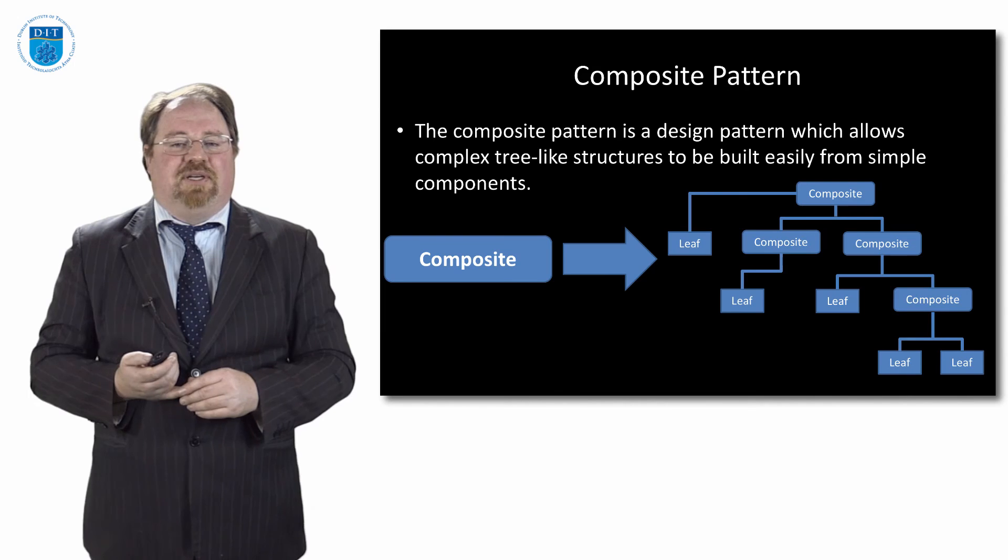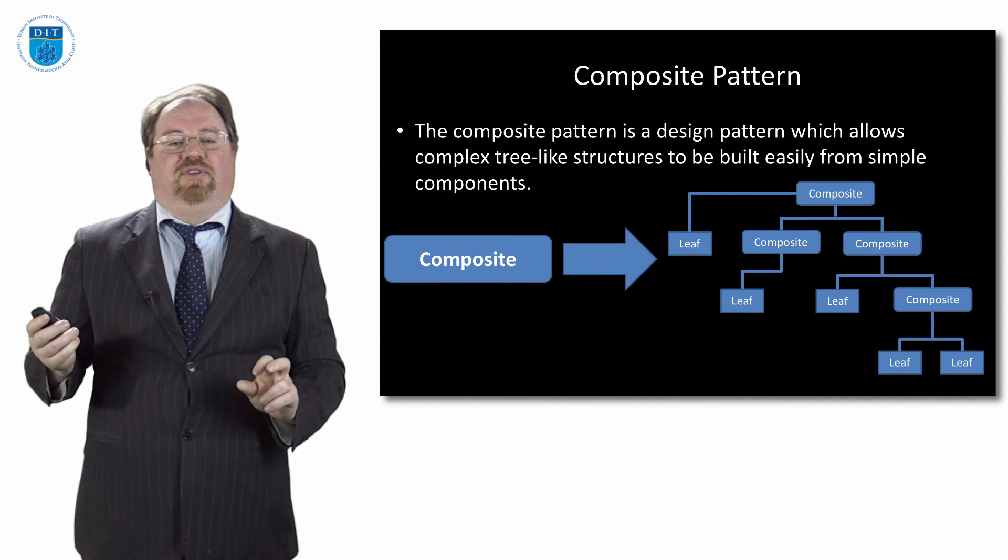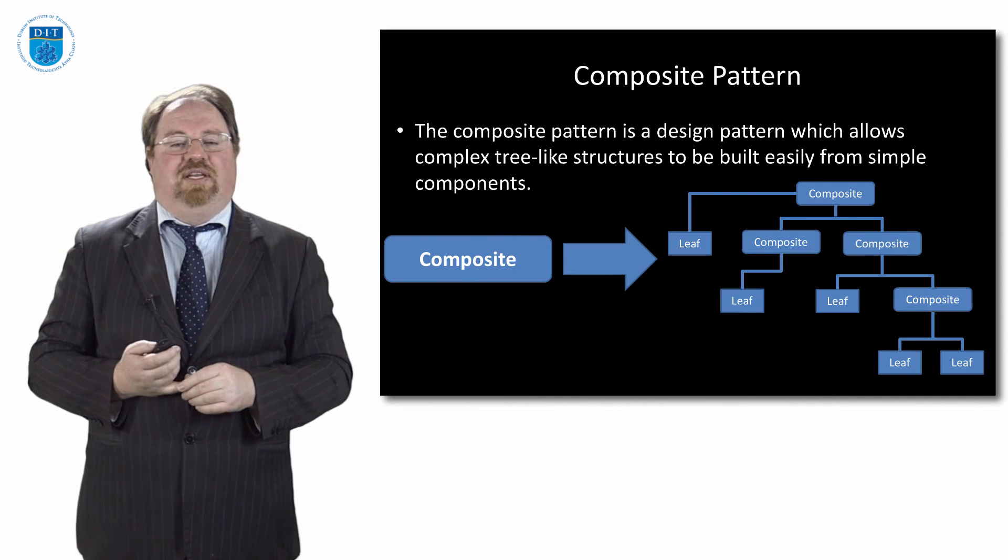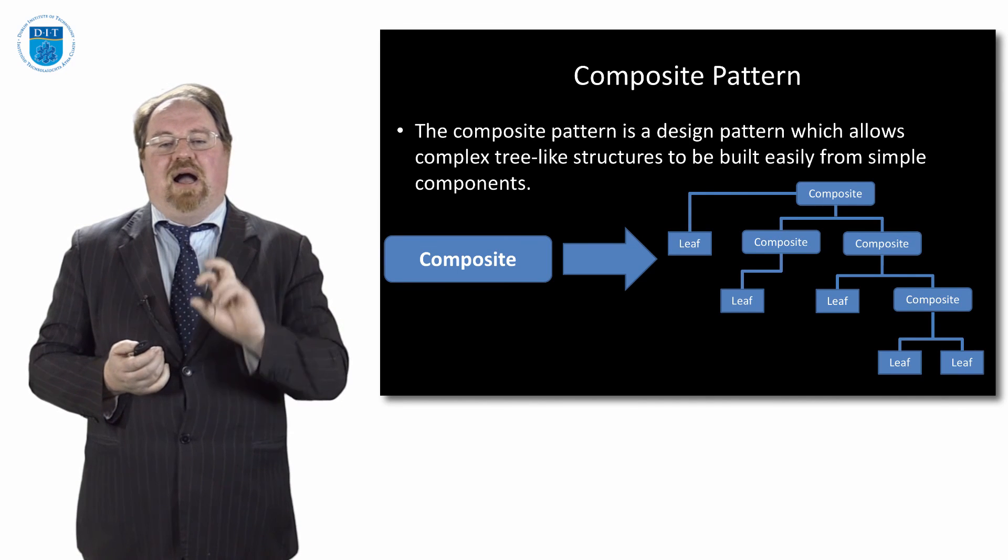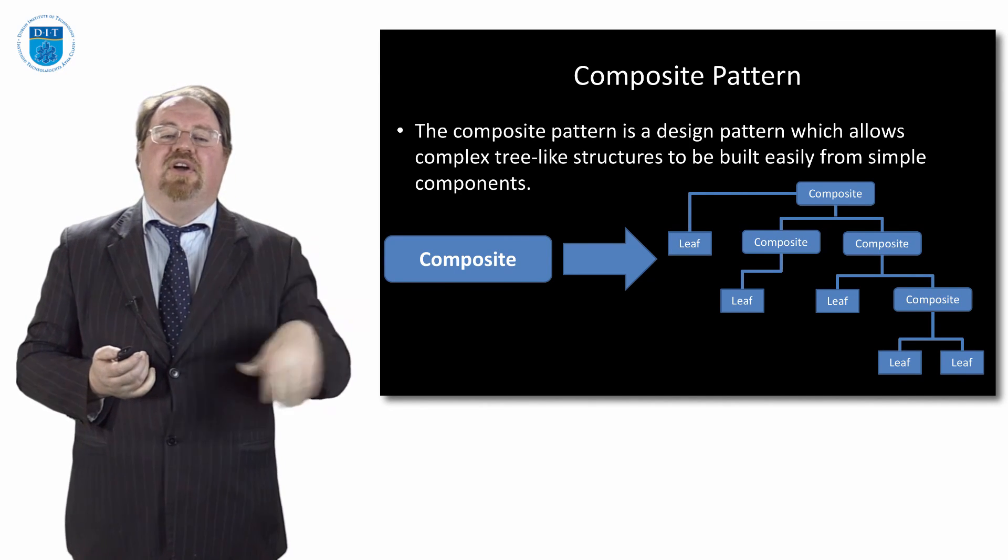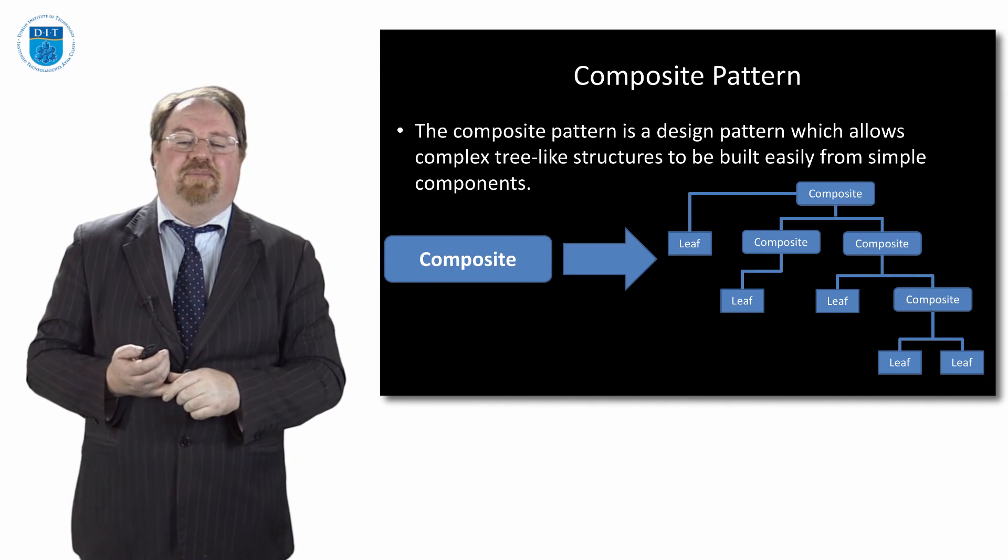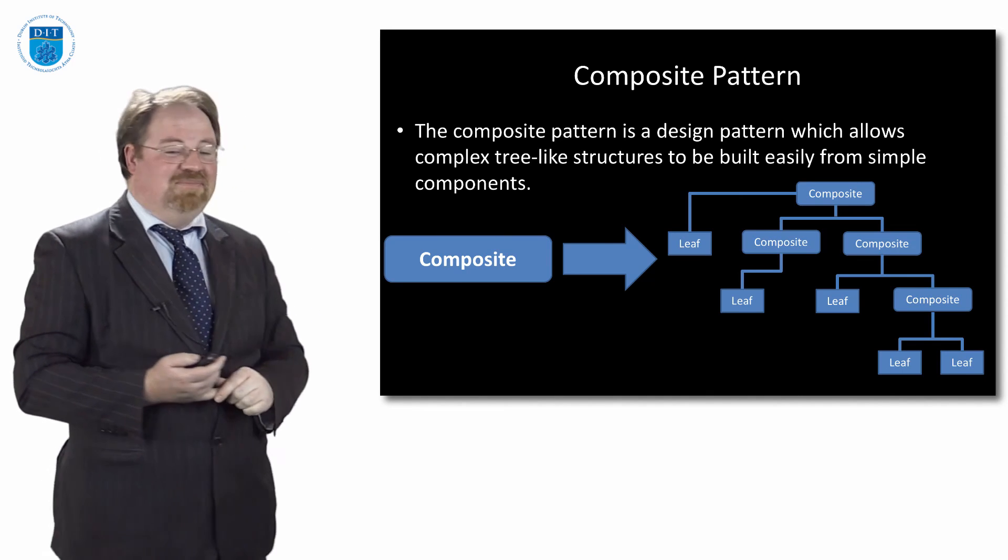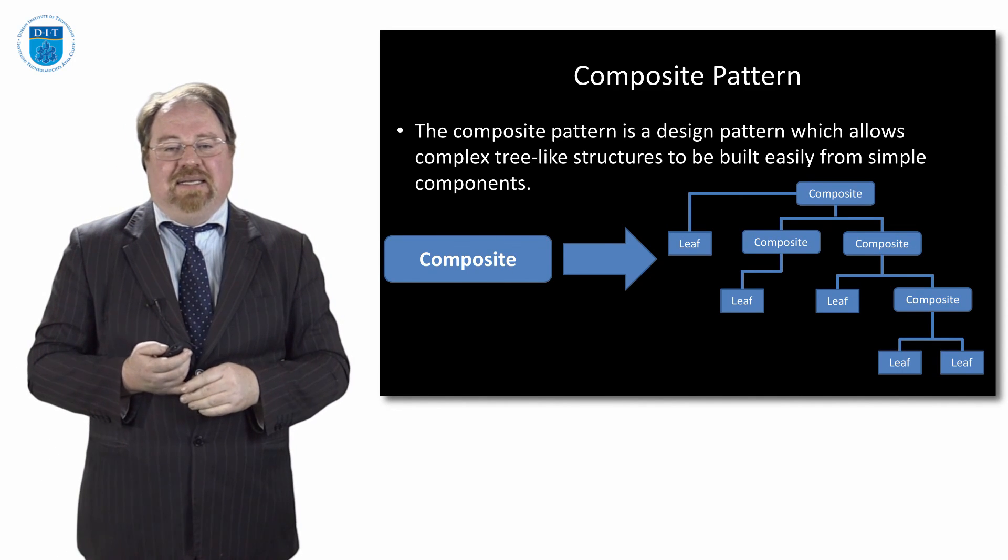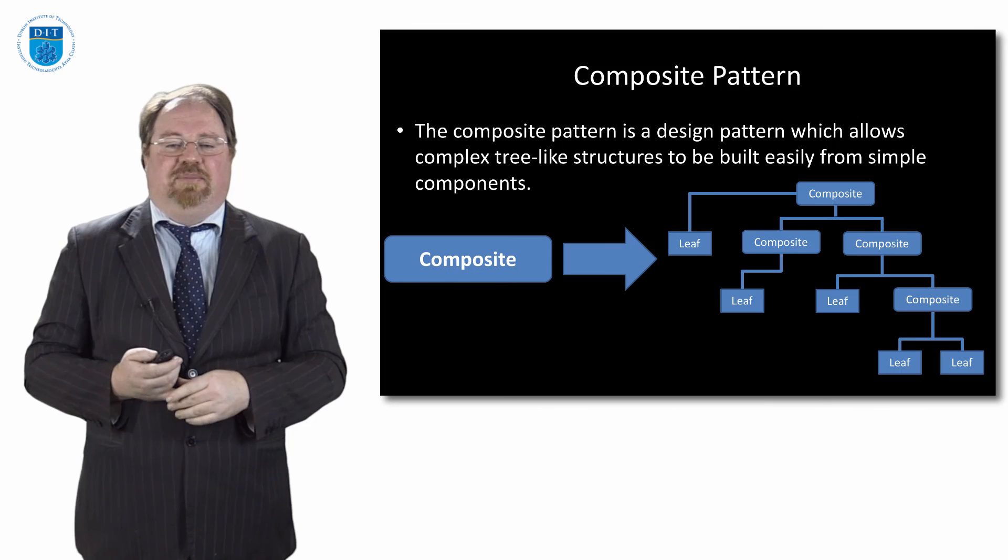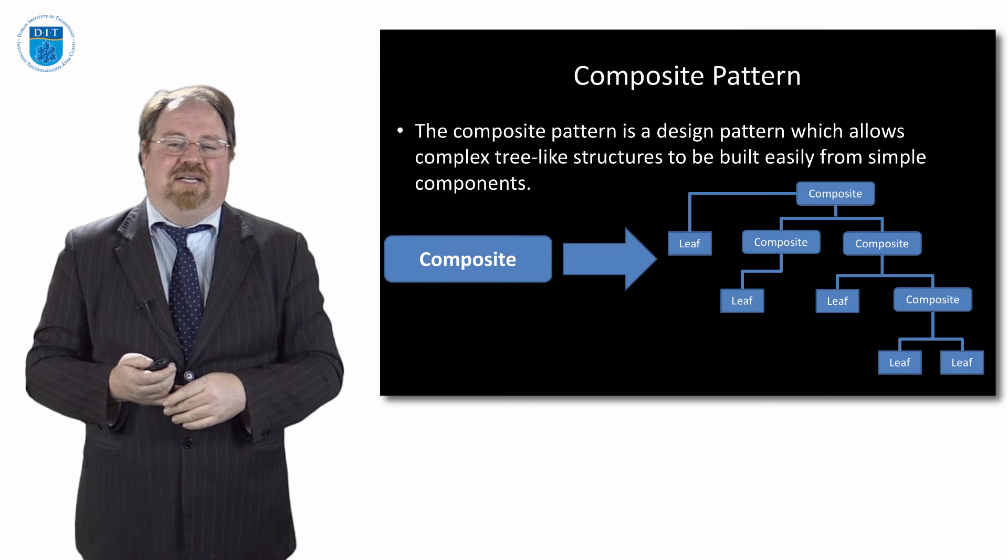The composite pattern is an interesting one. It allows you to create tree structures from simple components and each tree usually has like either another composite element or a leaf element which is a terminal node on the tree. It allows you to build these things quite quickly and we've seen before that trees can be very effective for processing certain kinds of information.